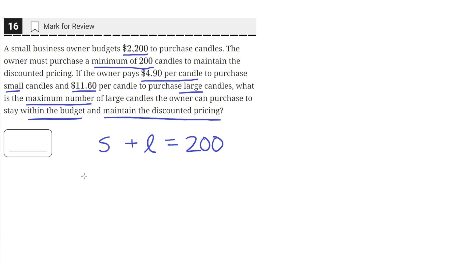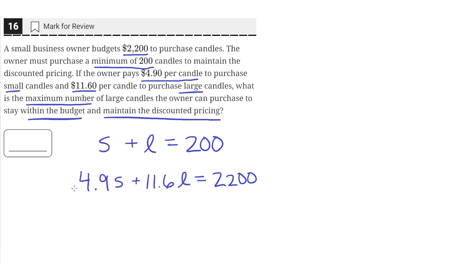Small candles cost $4.90 each, so 4.9S gives us the total amount spent on small candles. When we add that with 11.6L — the cost of one large candle multiplied by the number of large candles — that gives the total spent on large candles, and it should add up to at most $2,200. These two equations represent the scenario where we have exactly 200 candles and spend exactly $2,200. So solving for L will give us the number of large candles needed to just barely reach 200 total candles and for the cost to be just at $2,200 — giving us the maximum number of large candles.